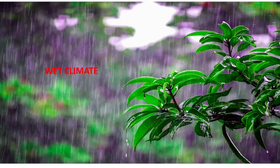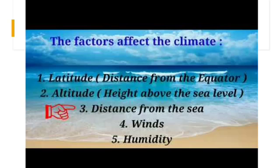Climate affects plants and animals and the way people live, have their food, and wear clothes. The factors that affect the climate are five: latitude or distance from the equator, altitude or height above sea level, distance from the sea, winds, and humidity.